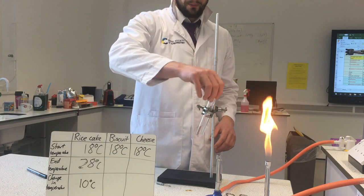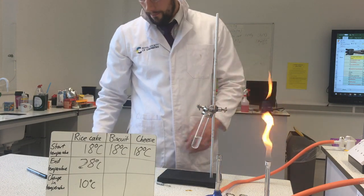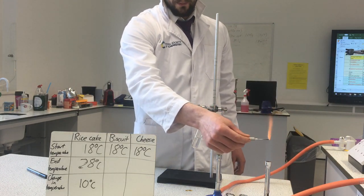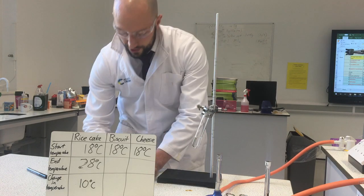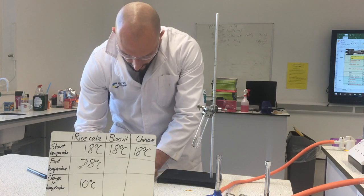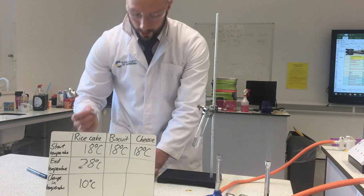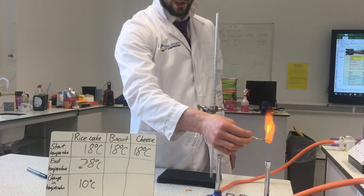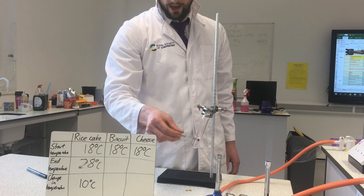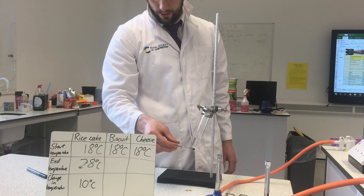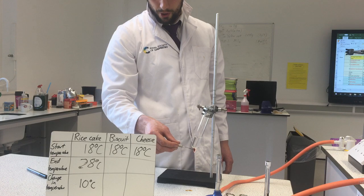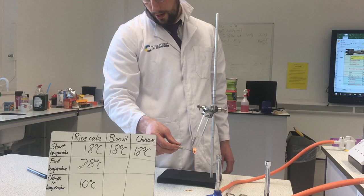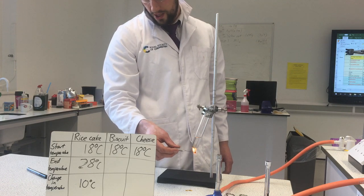I'm going to put a fresh set of water in and do the same with a different food this time. I'll take another pin, heat it in my Bunsen burner flame, and stick it into a piece of biscuit. The rice cake contains lots of carbohydrate — we know that rice has the nutrient carbohydrate in it. The biscuit also contains some carbohydrate, but as well as that it contains some sugar and some fat, so it's got slightly different nutrients. We'll see how that affects the amount of chemical energy it's got in it.